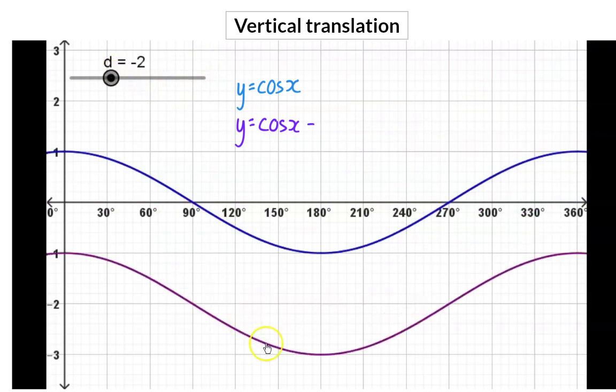Here, the value is minus two and the whole graph moved down two units.